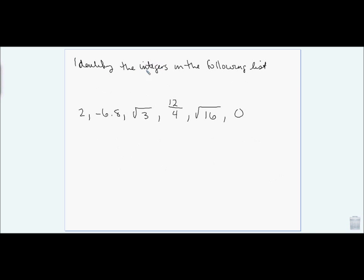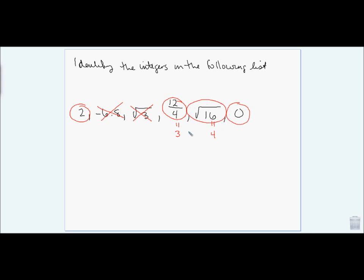Integers are not fractions and not decimals. 2 is an integer. Negative 6.8 is not. The square root of 3 can't be simplified without being a non-repeating decimal, so it is not an integer. 12 divided by 4 is 3, so that is an integer. The square root of 16 equals 4, so that is an integer. And 0 is an integer.